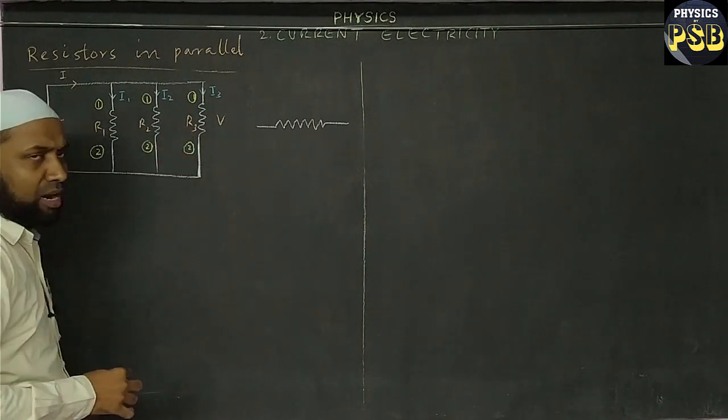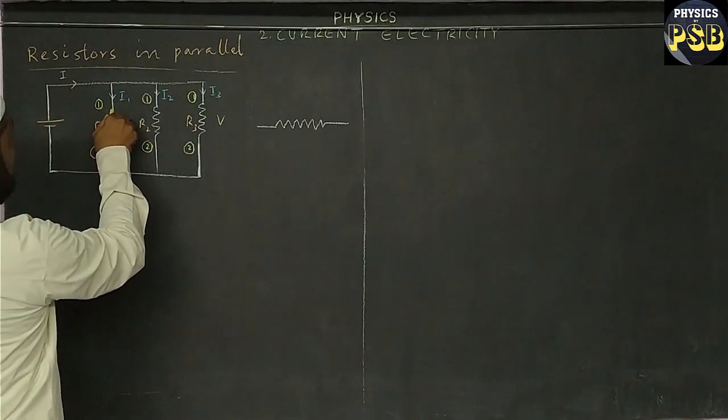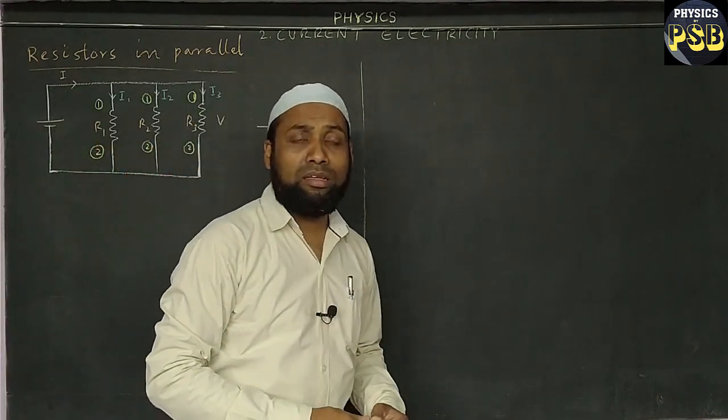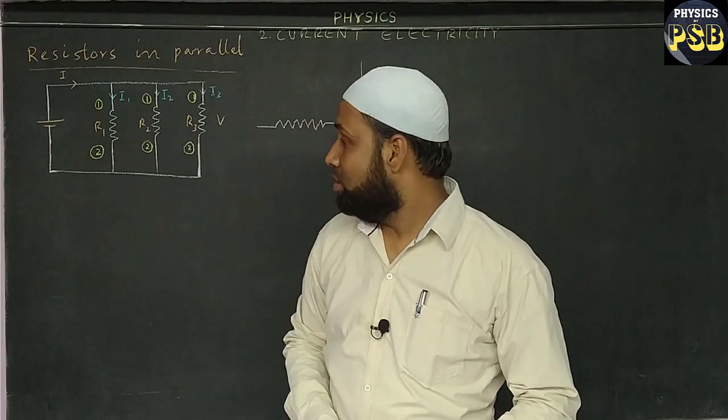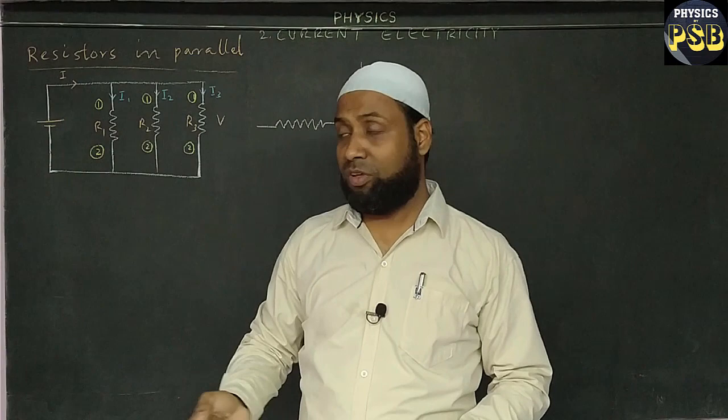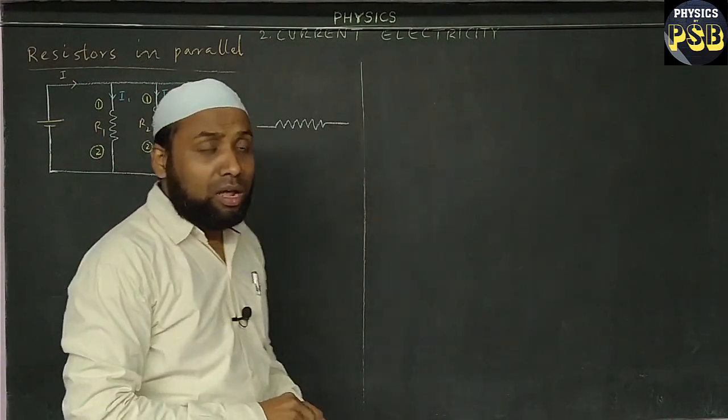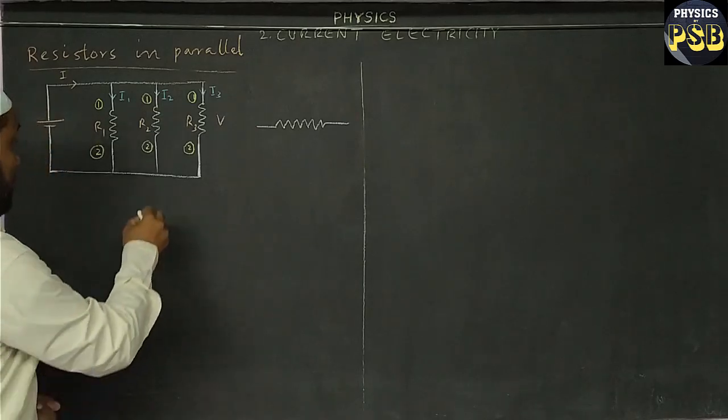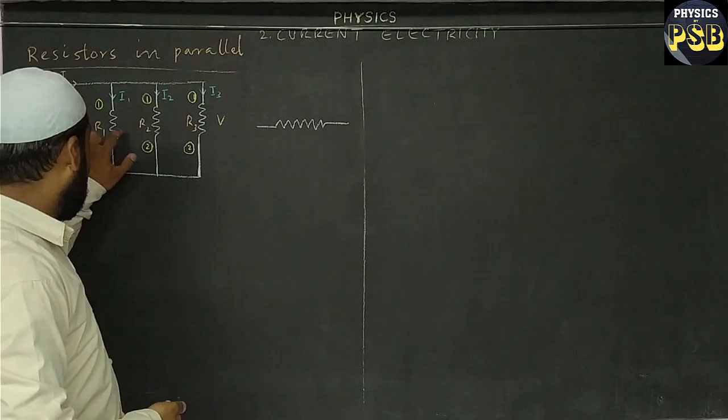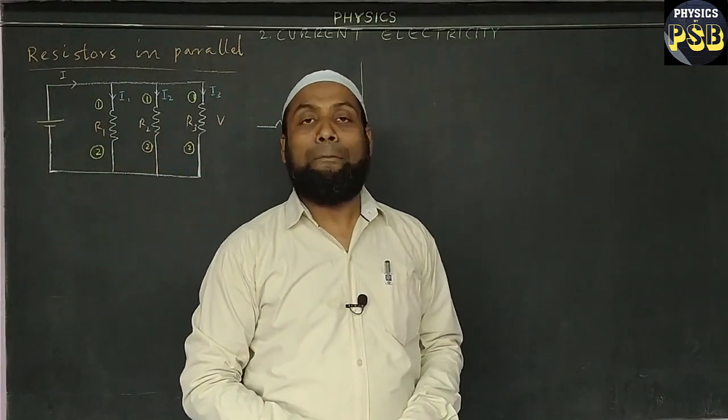I call it terminal 1 and terminal 2 of this resistor. If you connect the first terminal of all three resistors together and you do the same thing with the second terminal as well, we call such combination a parallel combination. So here R1, R2, and R3 are connected in parallel.